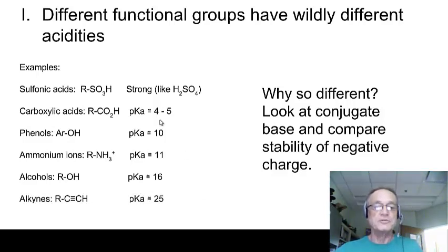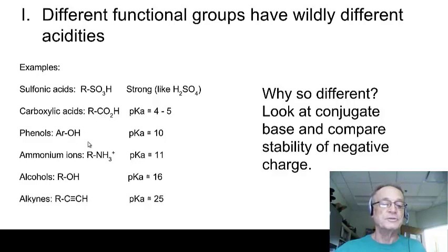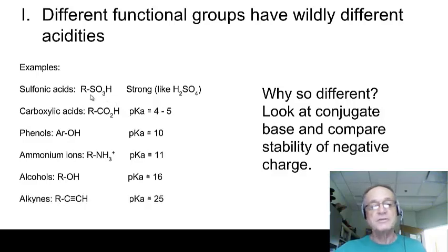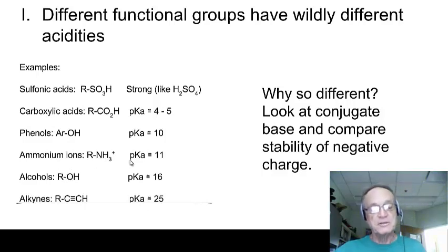So why so different? Why are some acids so much stronger than others? One thing we'll want to do is look at the conjugate base and compare the stability of the negative charge. If we allow an acid to donate its H+, what's left is its conjugate base. If we can get a handle on how stable those conjugate bases are — the negative charges that come from them — then we can understand acid strength, because the stronger the conjugate base, the weaker the acid, and vice versa. If an acid really wants to give away an H+, its conjugate base would be very happy and would be a weak base. Whereas if an acid really doesn't want to give away its H+, the conjugate base RO⁻ would not be stable and would be a strong base.